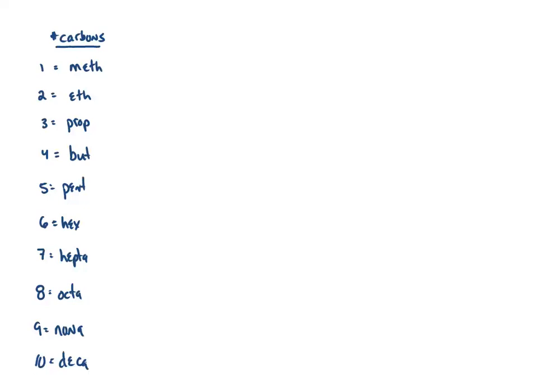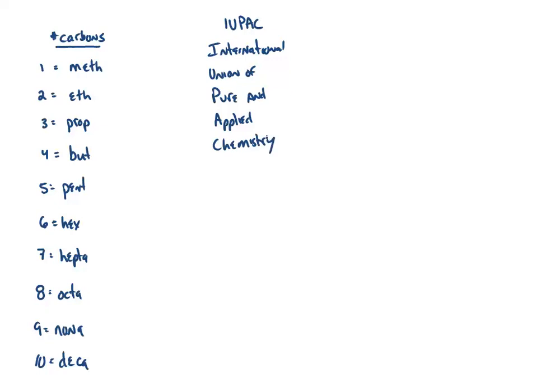When we get to the biological molecules, even though we could name them using the rules we're developing now, we tend to use their common names when they get really large because their real chemical names are a mouthful to say and very complicated. The rules that we're using are called IUPAC, which stands for International Union of Pure and Applied Chemistry. When you see on the homeworks that you're using the IUPAC naming rules, it's just a set of rules that have been published and updated about 15 to 20 years ago, and that's what everyone uses.